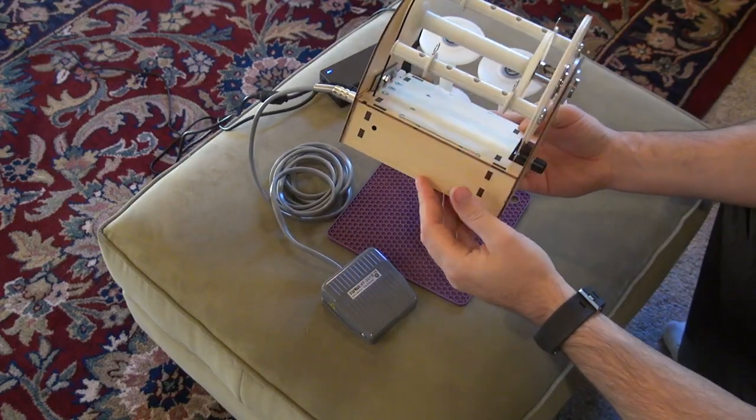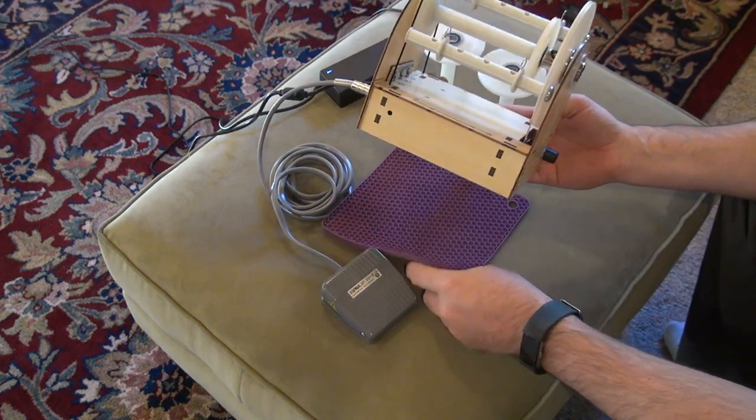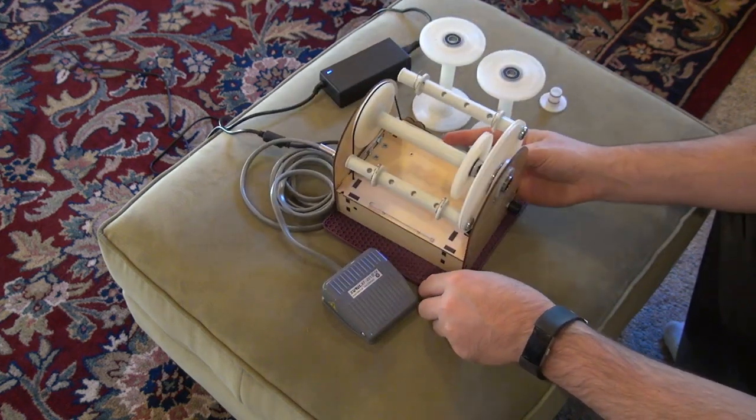So here's the Electric Eel Wheel 5.2. When you order this you'll also get a silicon mat to help reduce vibrations when you set it down on it.